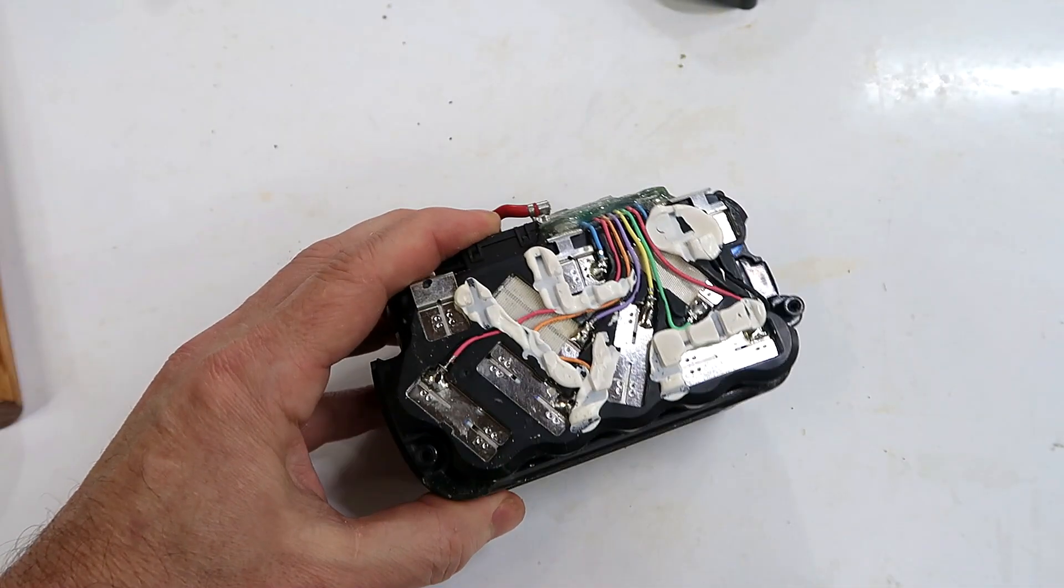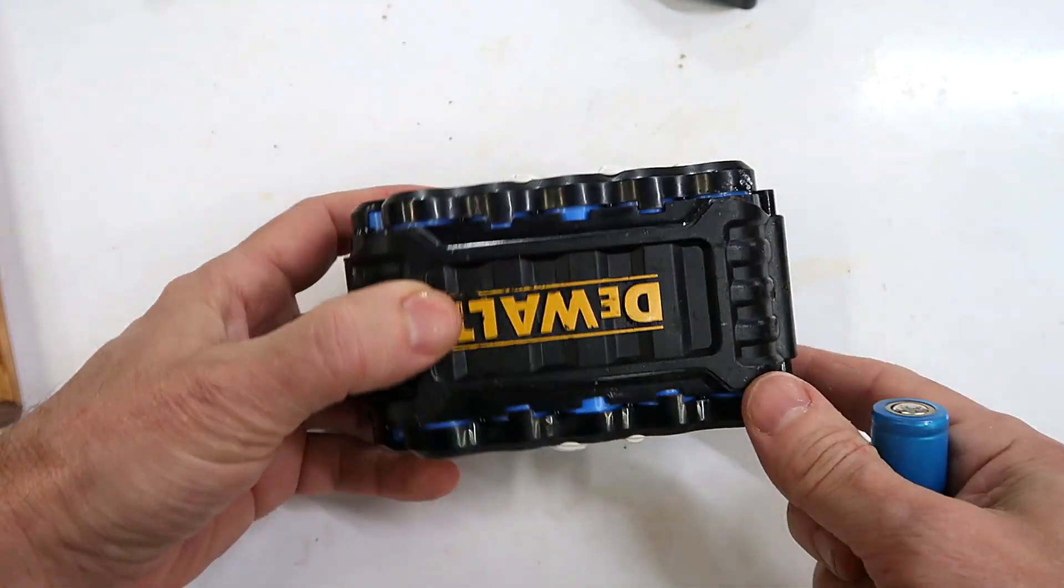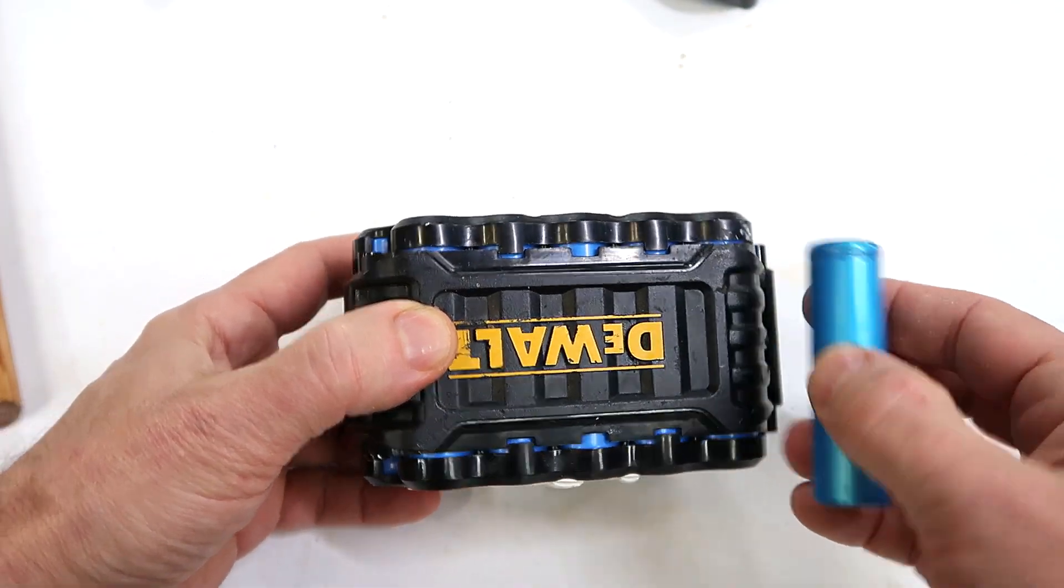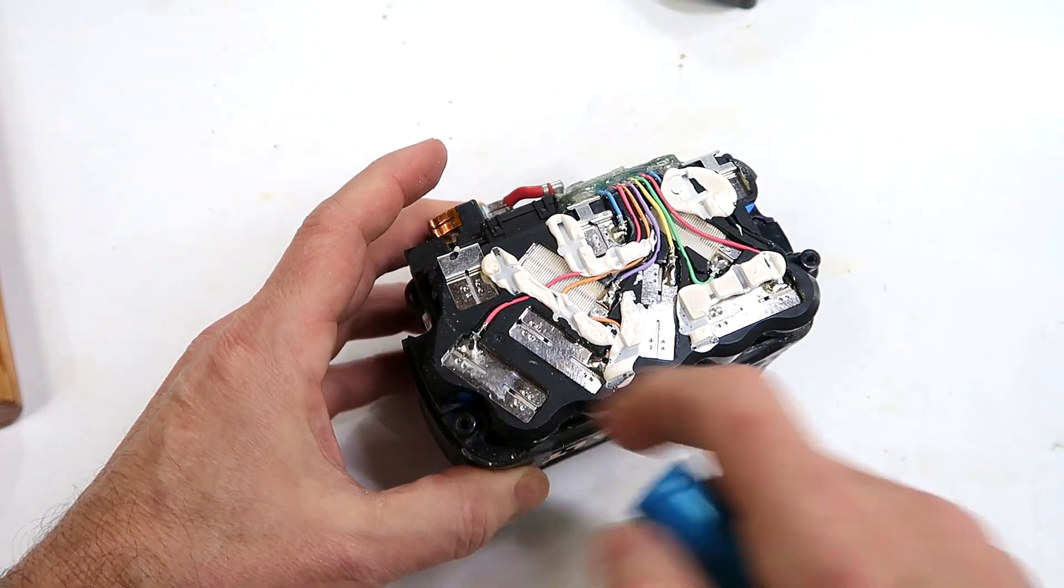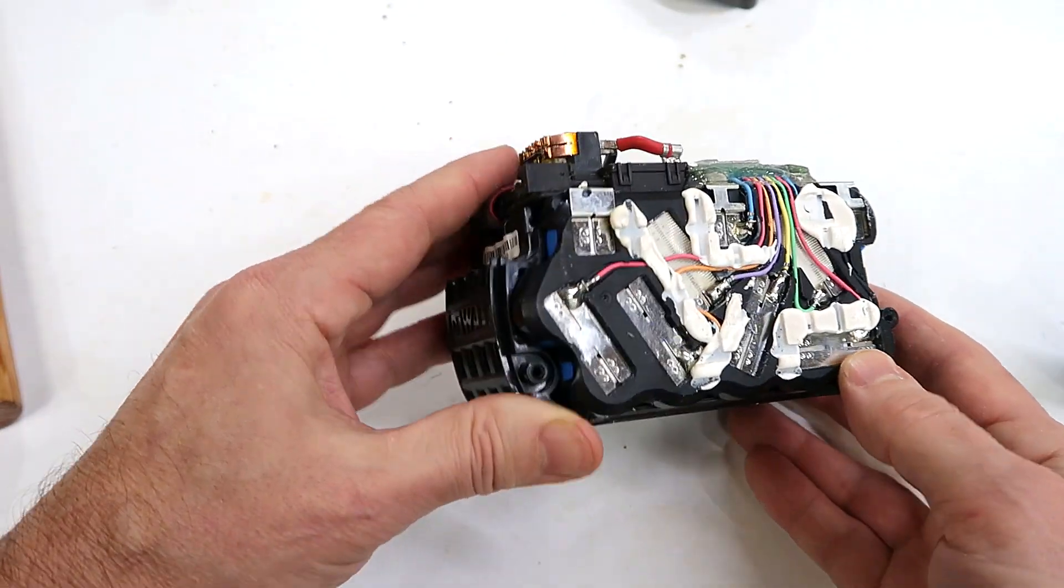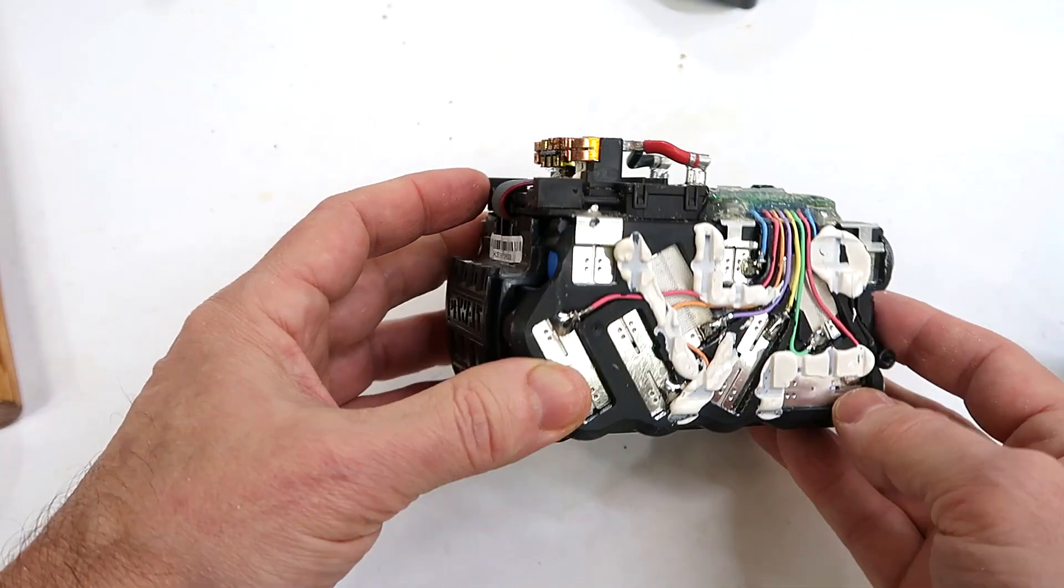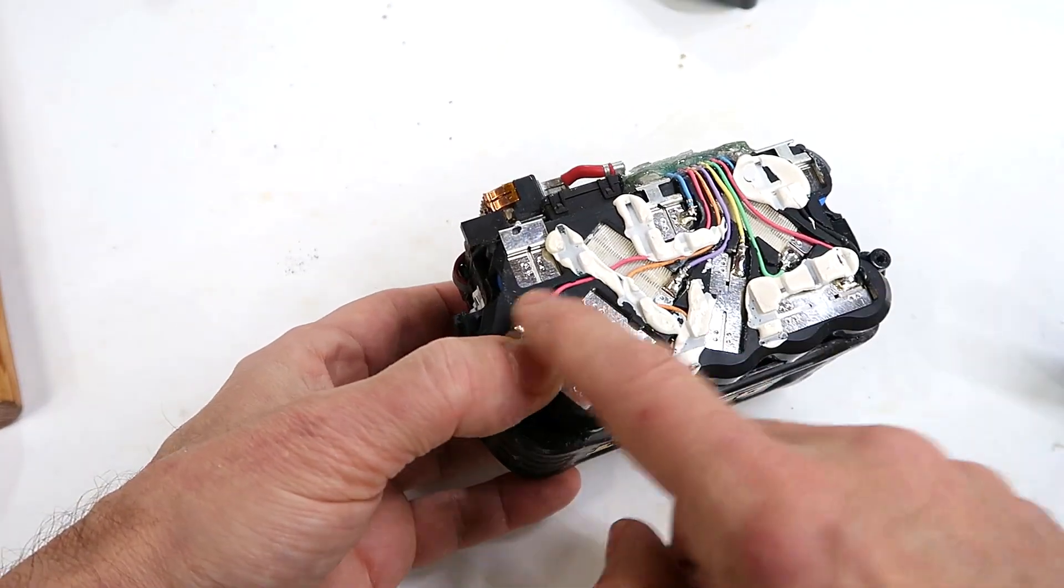Looking inside the pack, it's got 15 of these 18650 style cells. Five of them here, another five here, another five here, and they're wired in three rows of five.